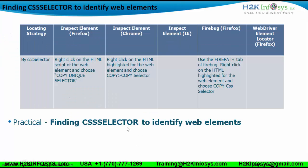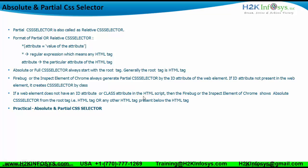Regarding absolute and partial CSS selectors, a partial CSS selector is also called a relative CSS selector. The format of a partial or relative CSS selector is as follows: a star sign followed by a square bracket, which contains an attribute equal to the value of the attribute within single quotes. The star sign is a regular expression meaning any HTML tag, and the attribute can be any attribute present in the HTML script.